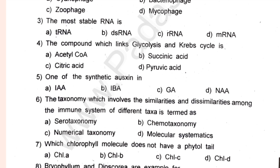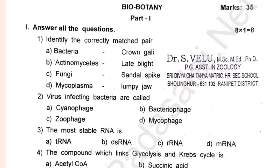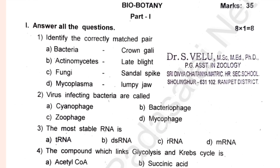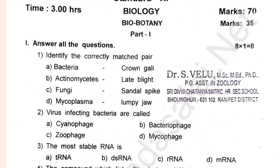Let's go to this video. The total marks are 70. Biobotany is 35 and Biozoology is 35, making a total of 70 marks.